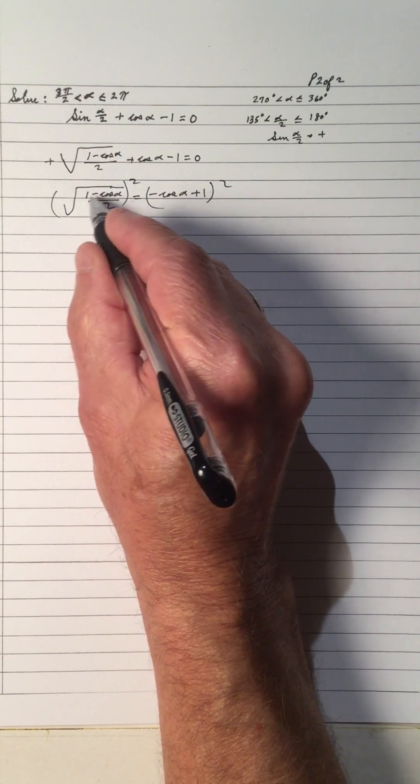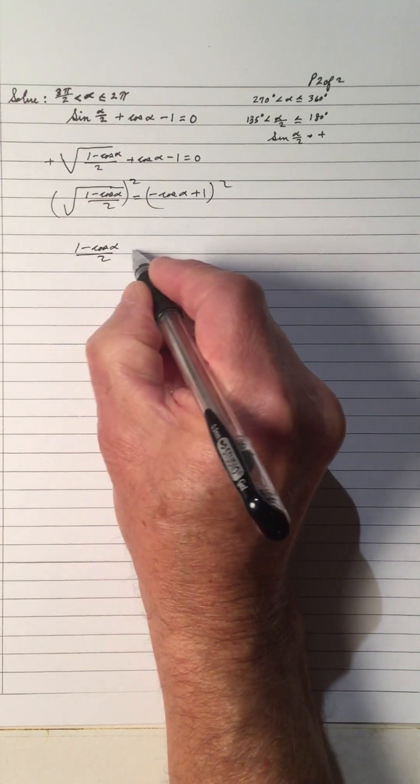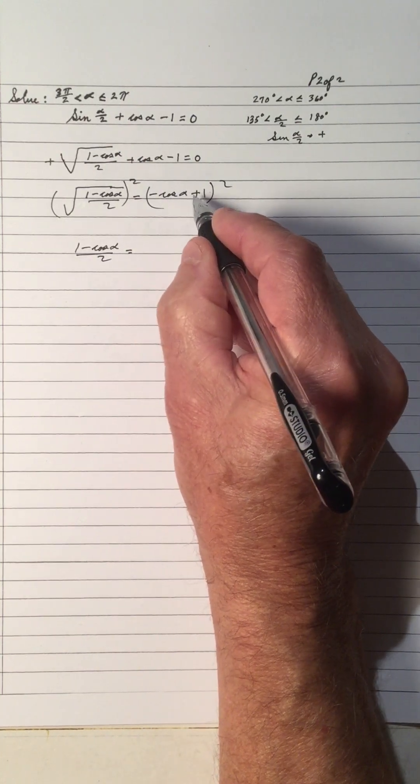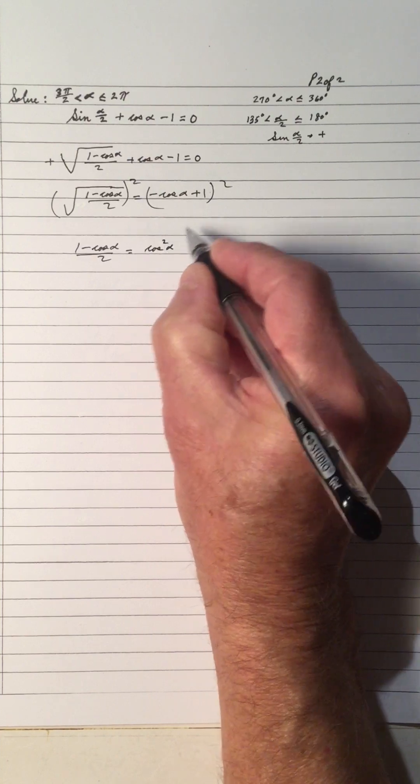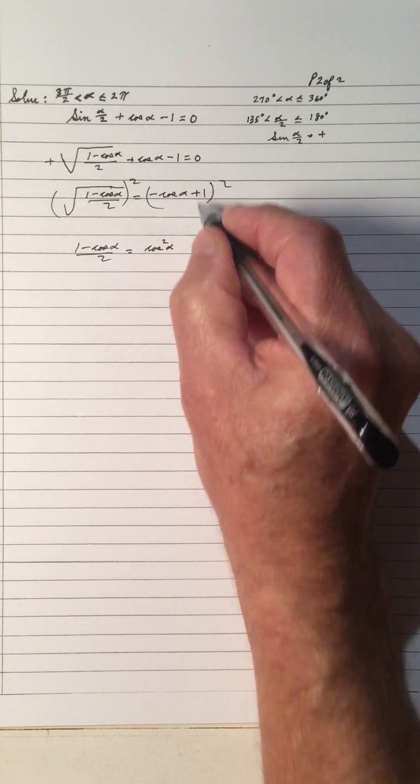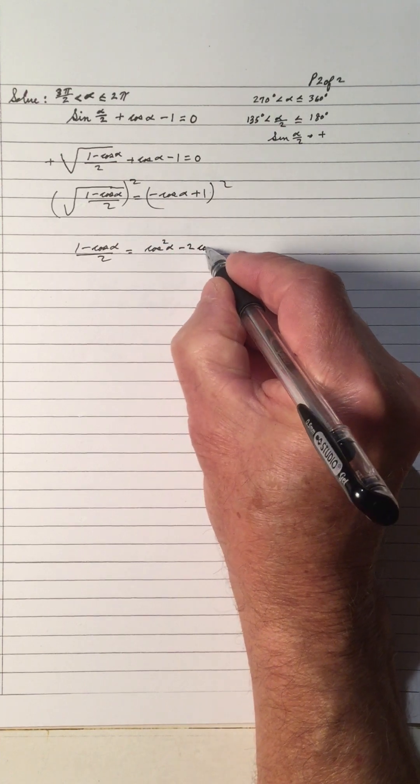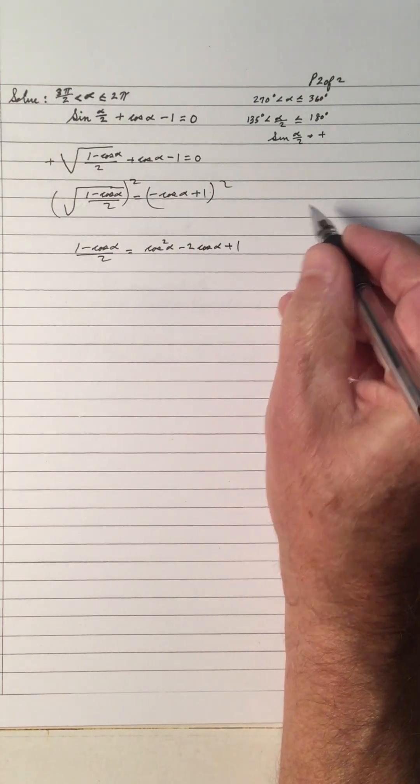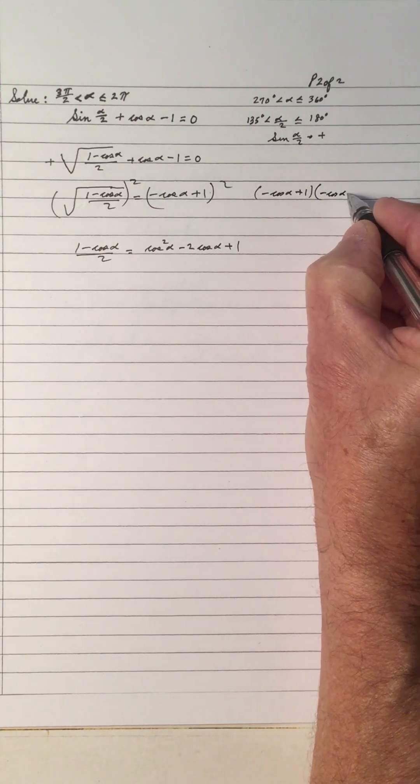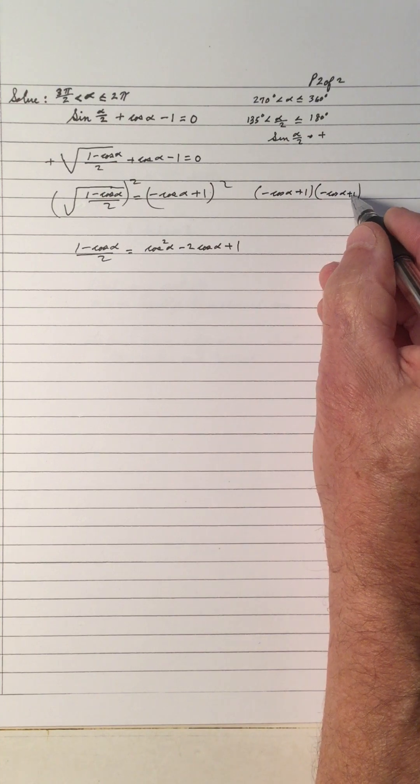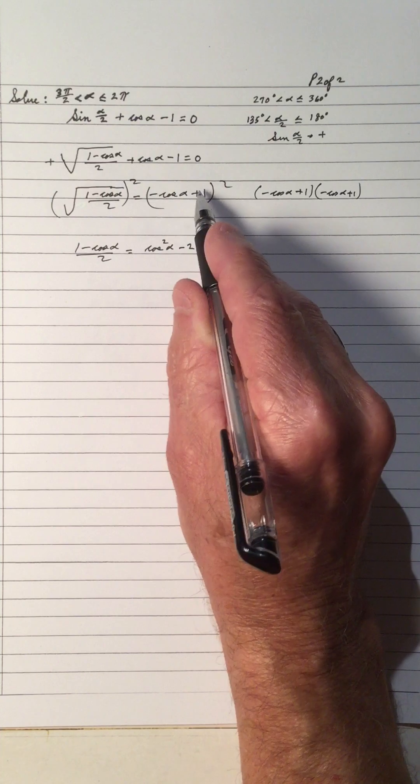Now that we have a square root, we'll square both sides. The square root of (1 - cos α)/2 squared is (1 - cos α)/2. We're going to square this binomial by the pattern. It's the first term squared: -cos α squared is cos²α. Multiply these two and double it: that's -2 cos α. And the last term squared is 1.